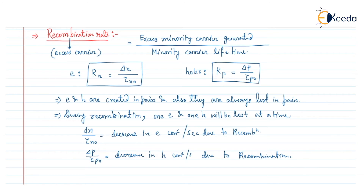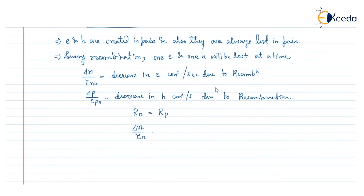Since electrons and holes will be lost in pairs and they are generated in pairs, we can say that the recombination rate of the excess electron Rn and the recombination rate for the excess hole Rp are both equal. From this equation we can write: delta-n divided by tau-n equals delta-p divided by tau-p. This is the relation between the recombination rate of the excess electron and the excess hole. In this way, we can calculate the recombination rate for the excess carriers inside the semiconductor due to non-equilibrium conditions. Thank you!